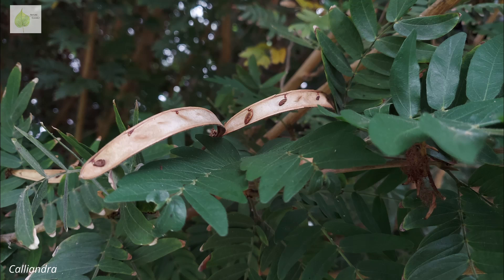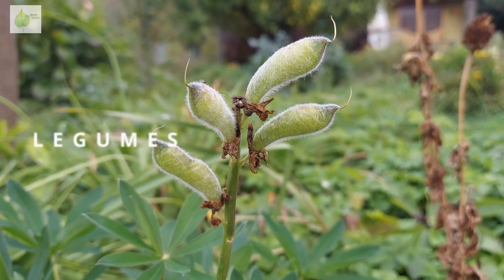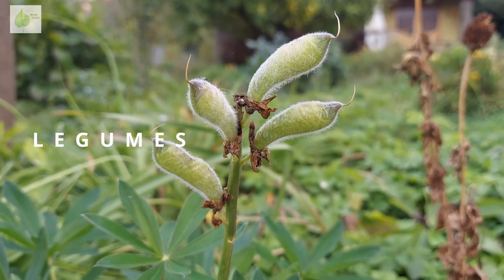Pods are often dehiscent, which means they naturally open when mature. But some can be indehiscent, such as those of carob, and they don't naturally split open when they mature. The fruit legume is the single most obvious character of the family Fabaceae and gives the family its common name, legumes.